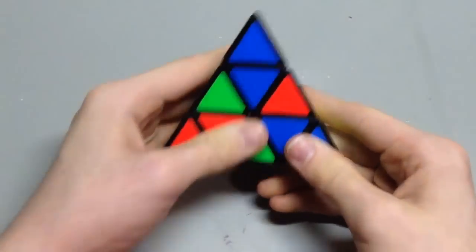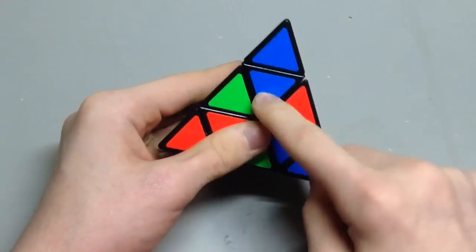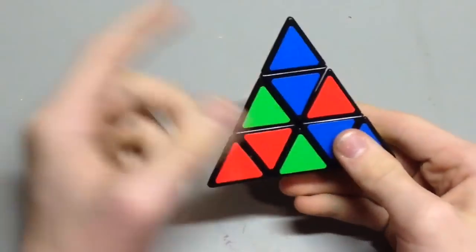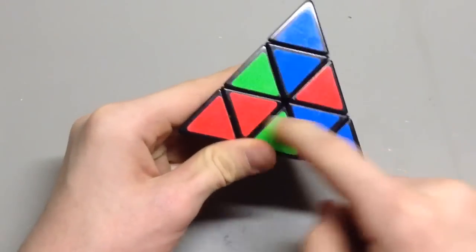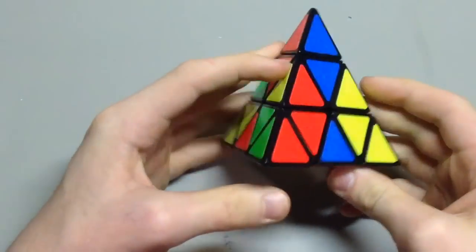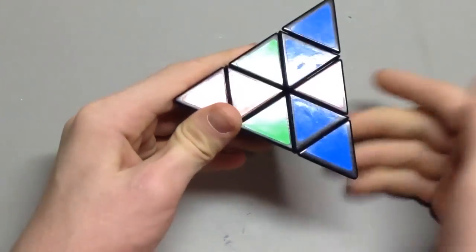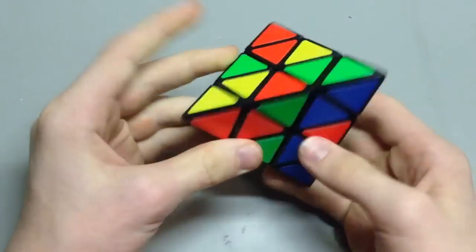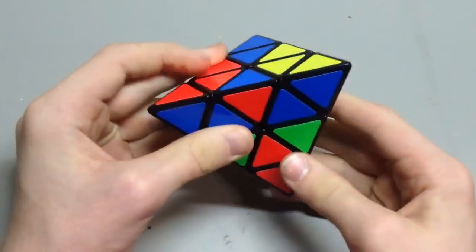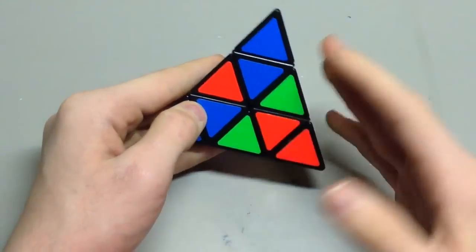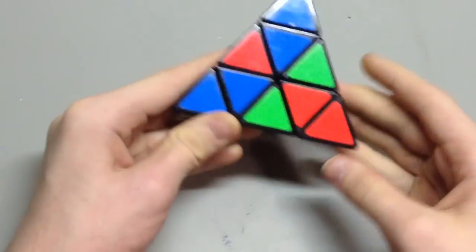Now we have to solve the pieces that are connected to the tips, so it'll look like a radioactive or whatever sign, these three. To do that, I always like to do blue first because that's what I learned on, but it's pretty easy to be color neutral.